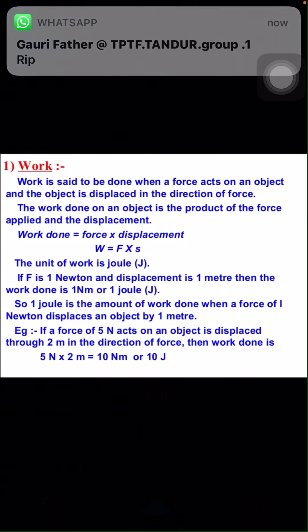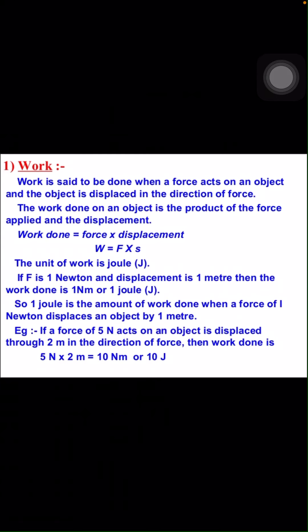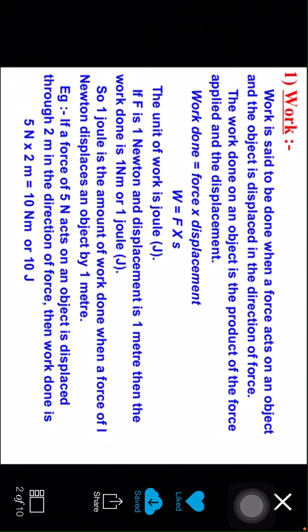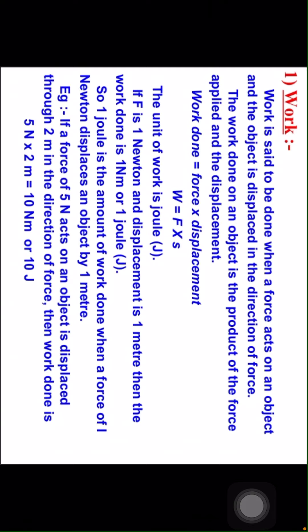Children, what is work? Work is said to be done when a force acts on an object and the object is displaced in the direction of force. The work done on an object is the product of the force applied and the displacement. Work done is equal to force into displacement, that is W equal to F times d. The unit of work is joule, J.